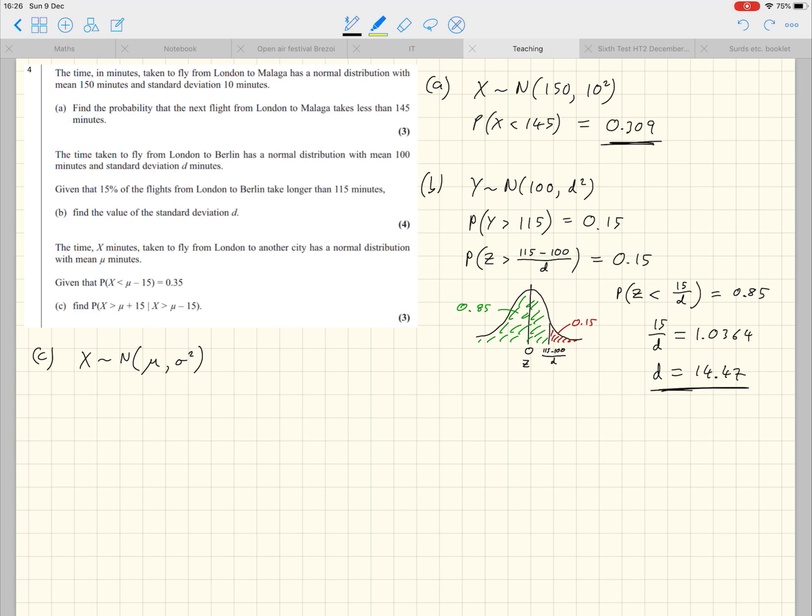Again, we're given some information and then we're asked to find it. Once again, this word given doesn't really need to be there. It's just saying, here's some information, work something out. Now this question requires you to draw a graph. This given here is quite different from this given here. This first given is giving us some information. Here we are, here's a sentence. The probability that X is less than mu minus 15 is 0.35. Work something out. To make sense of this, draw a graph.